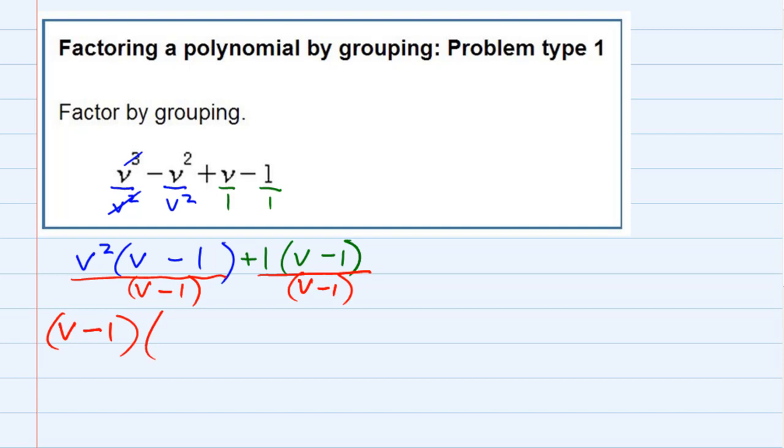So if I factor out a v minus one from the first, the v minus one would cancel, leaving me with v squared. And in the second term, if I factored out that v minus one, I would be left with just the plus one. So that's why that one that we factored out was so important. We can see it showing up down here. This is our factored form.